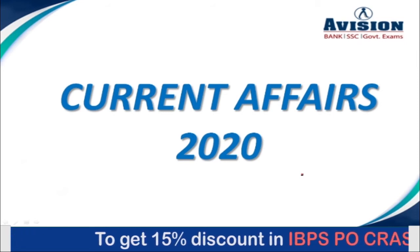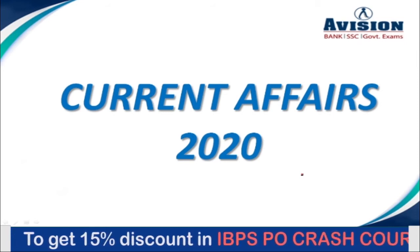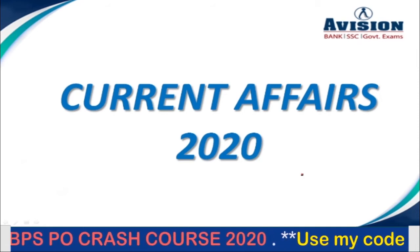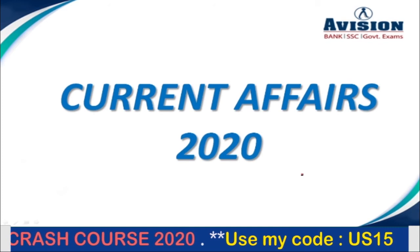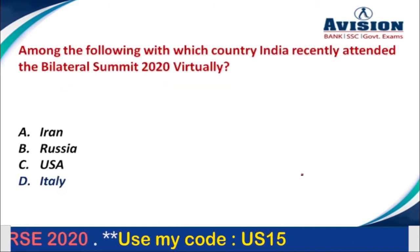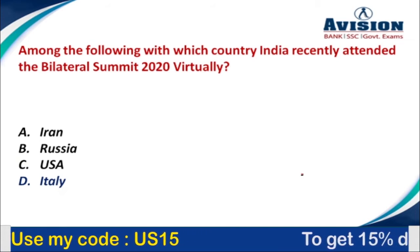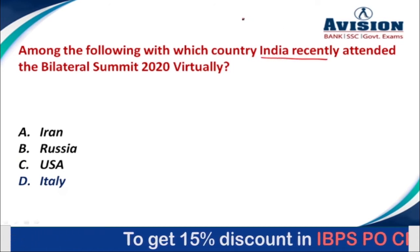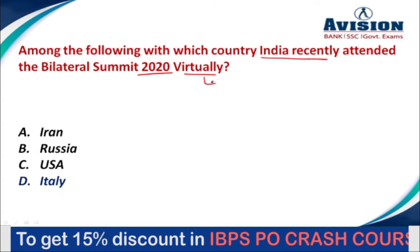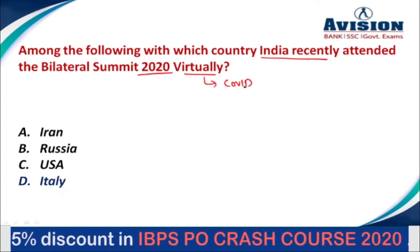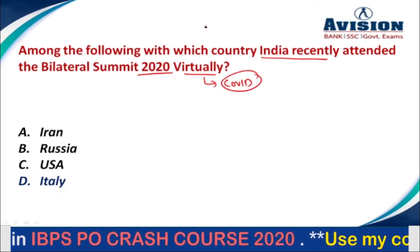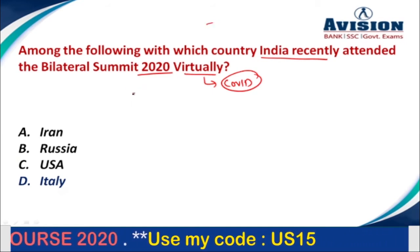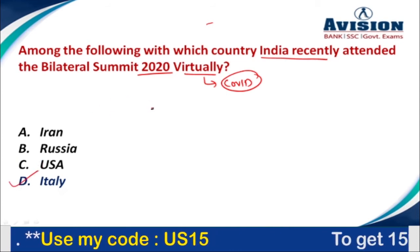If you have any problem with any topic, please write in the comments section. We will always be available in the comments. Let's start our first question: Among the following, with which country did India recently attend the bilateral summit 2020 virtually? India recently had a bilateral meeting with which country due to the COVID-19 situation? The options are Iran, Russia, USA, and Italy.